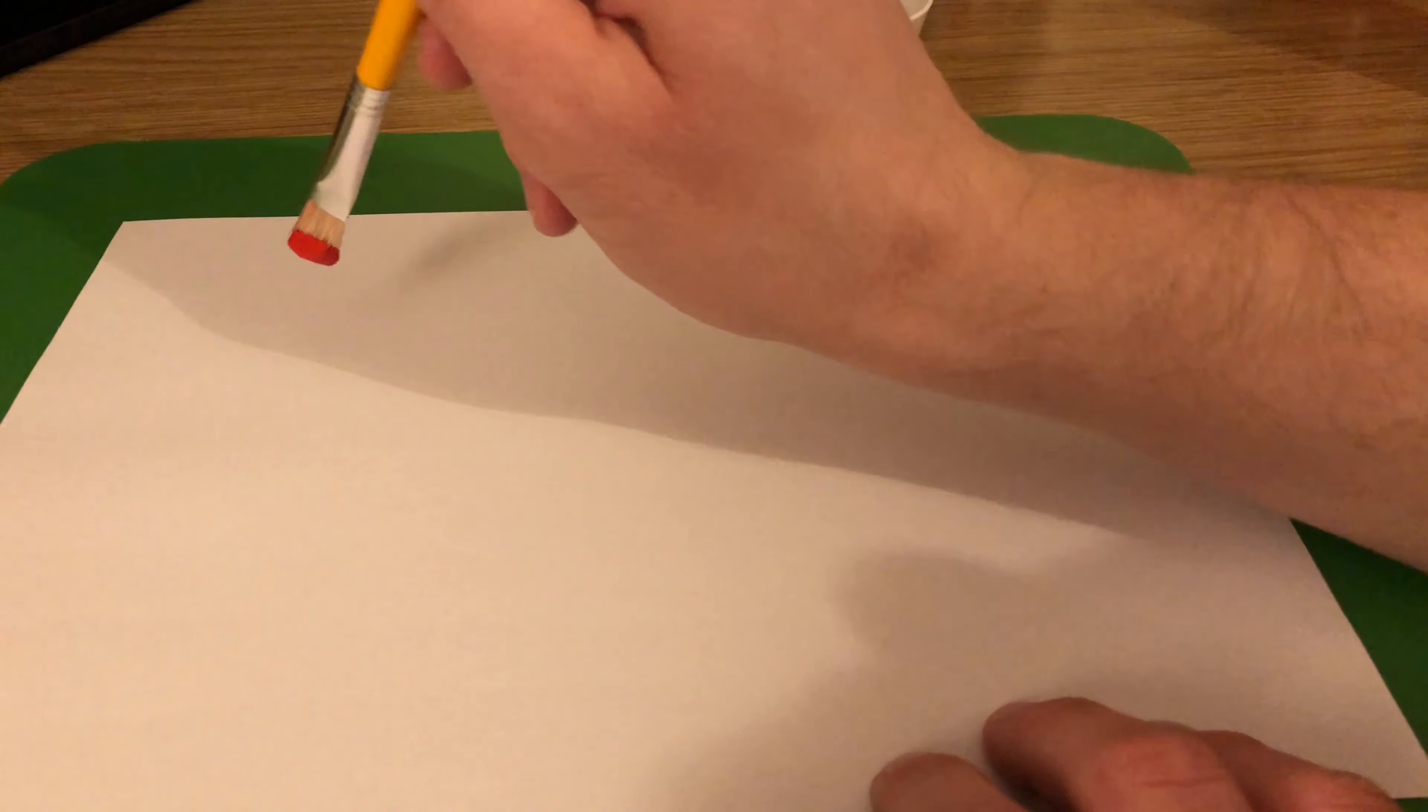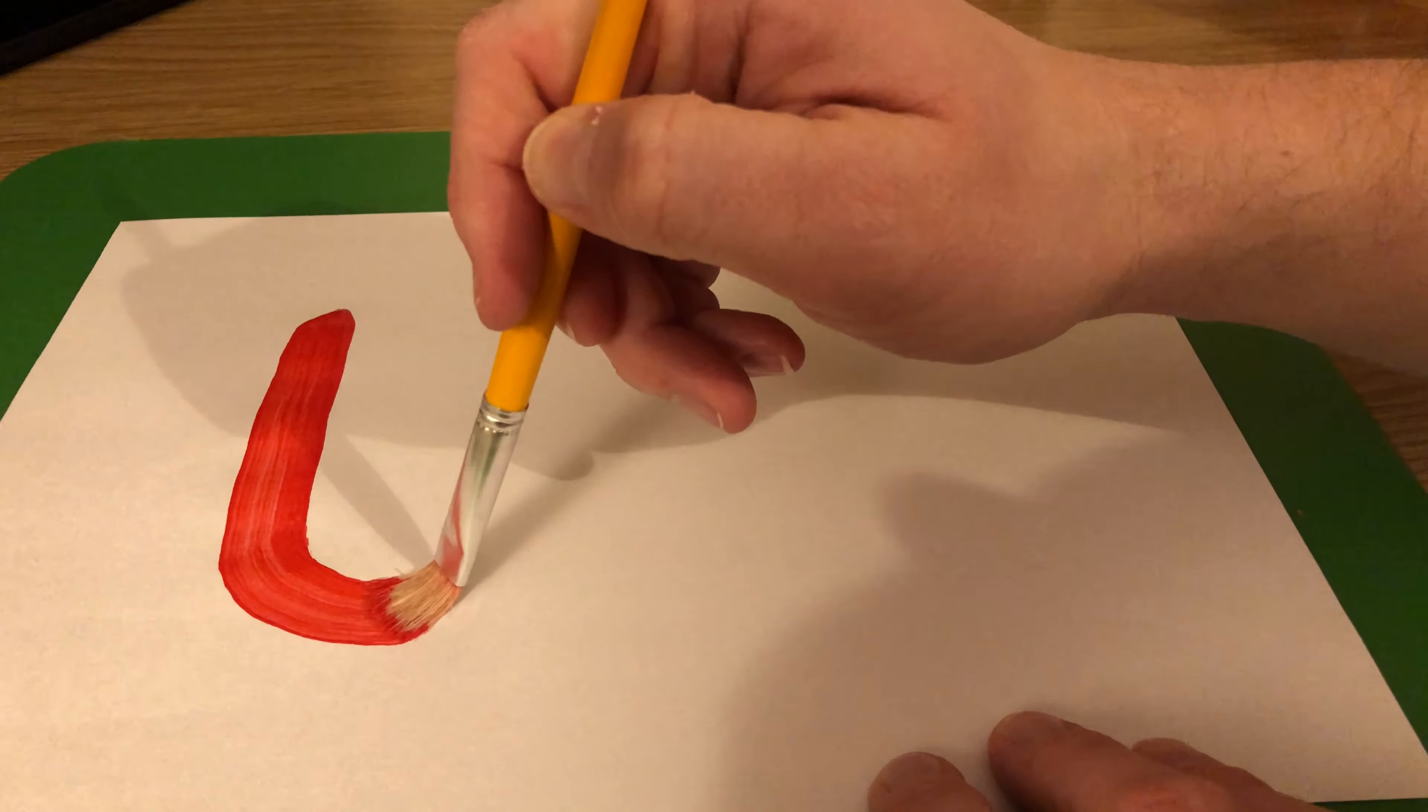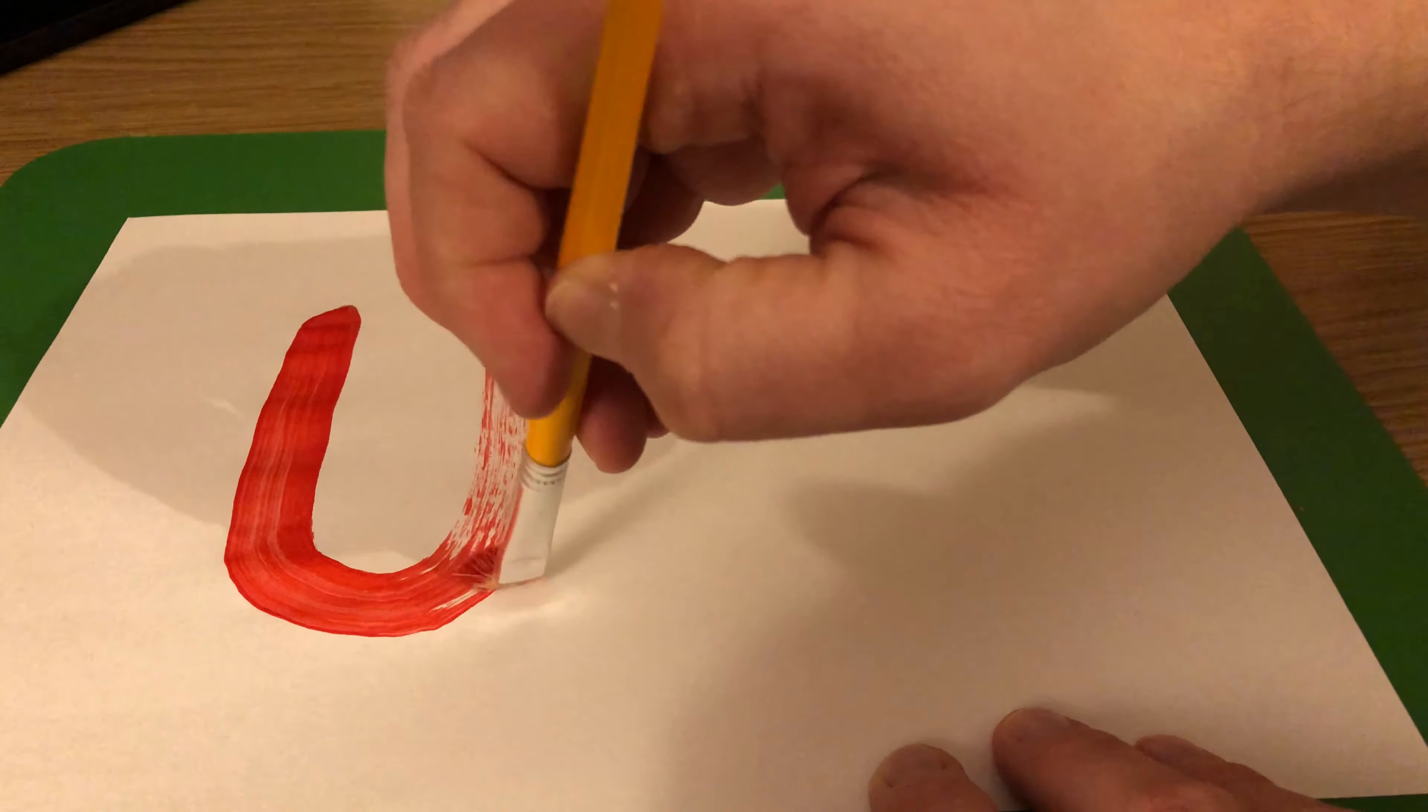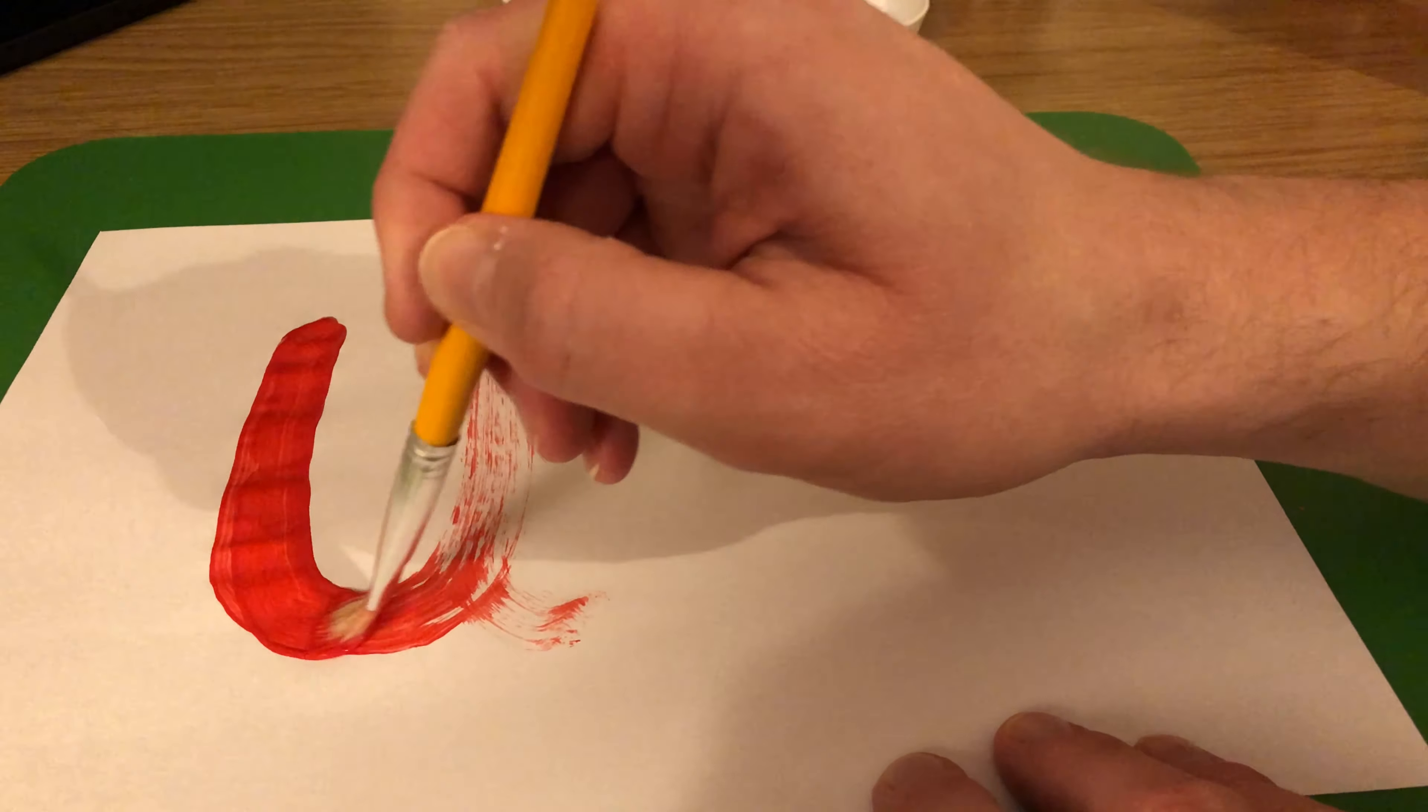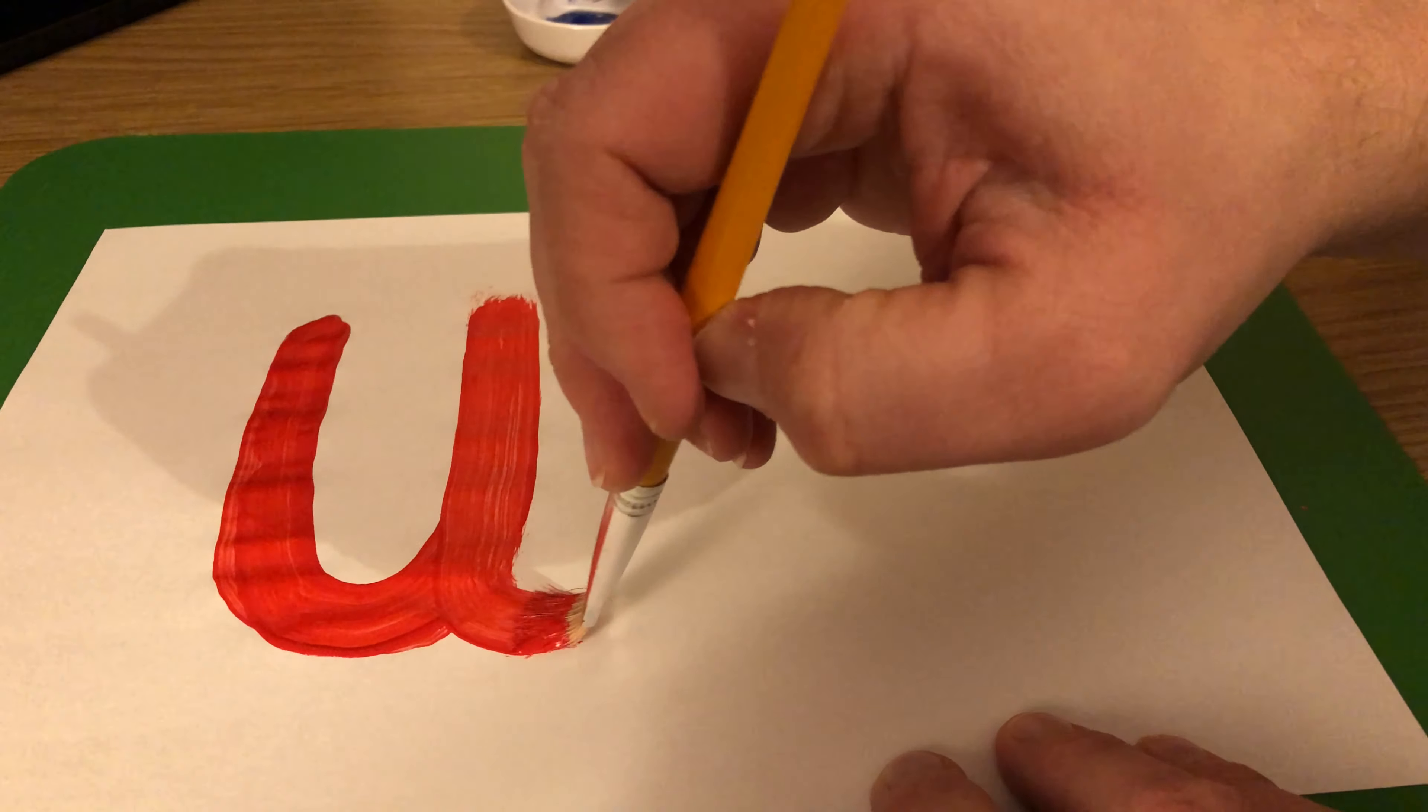So I'm going to do the letter U, our last day of exploring that letter in red first of all. So we start at the top, come all the way down and we curve and we go straight back up and we come down the same line and we flick. And I'm just going to do that a few times with the red paint so that it becomes nice and clear.